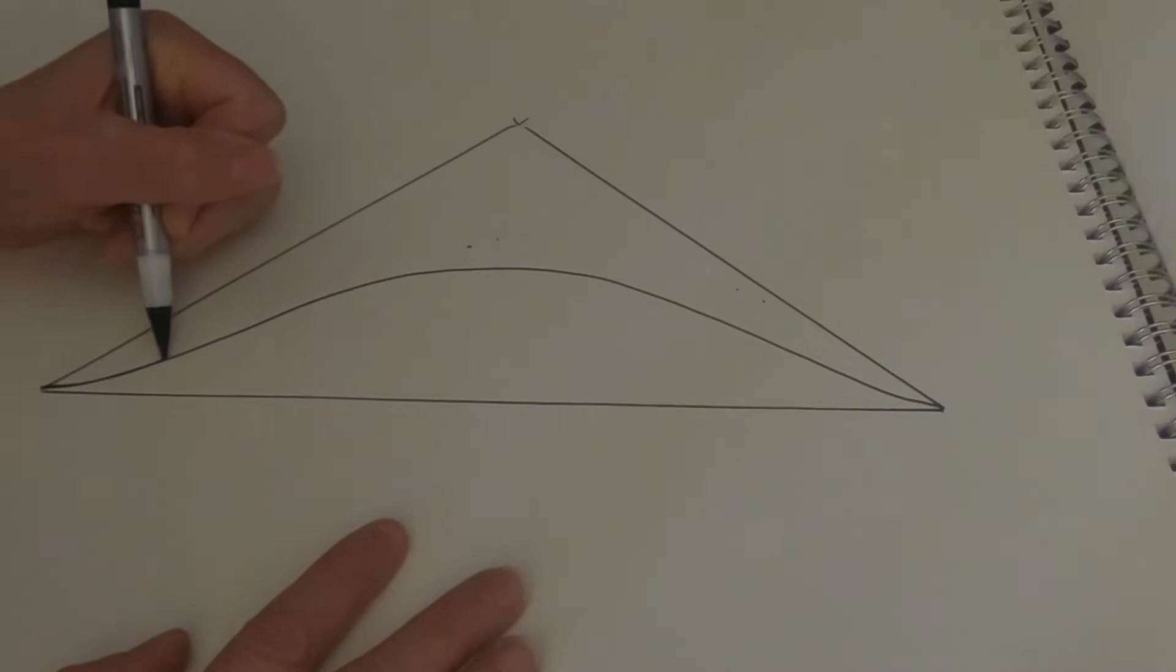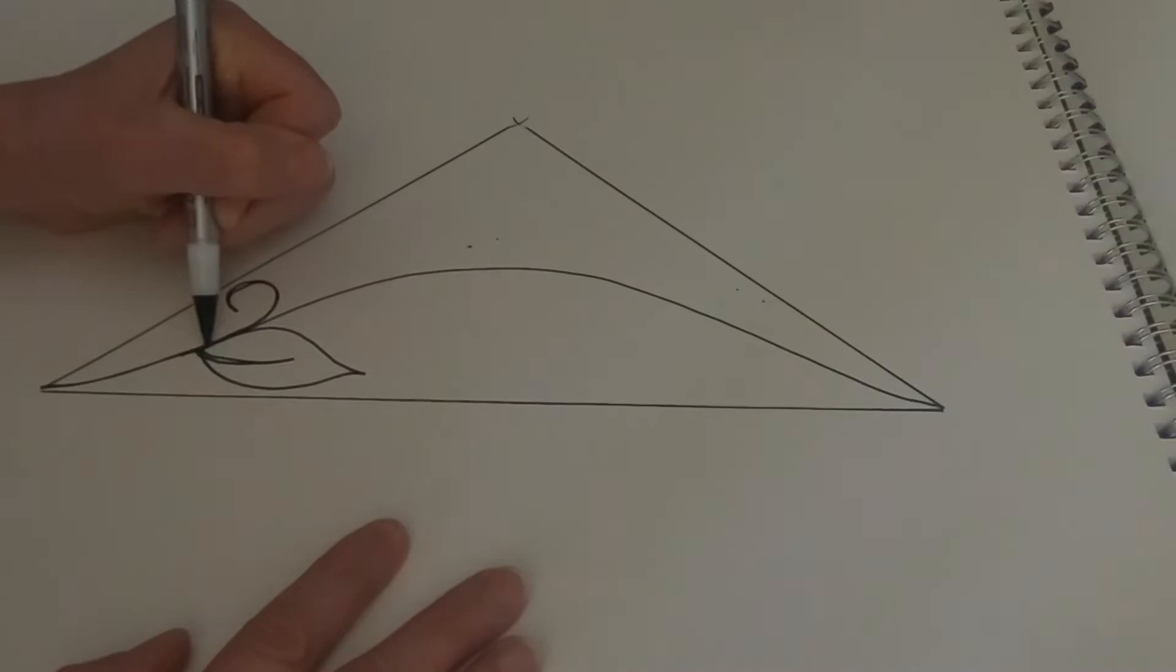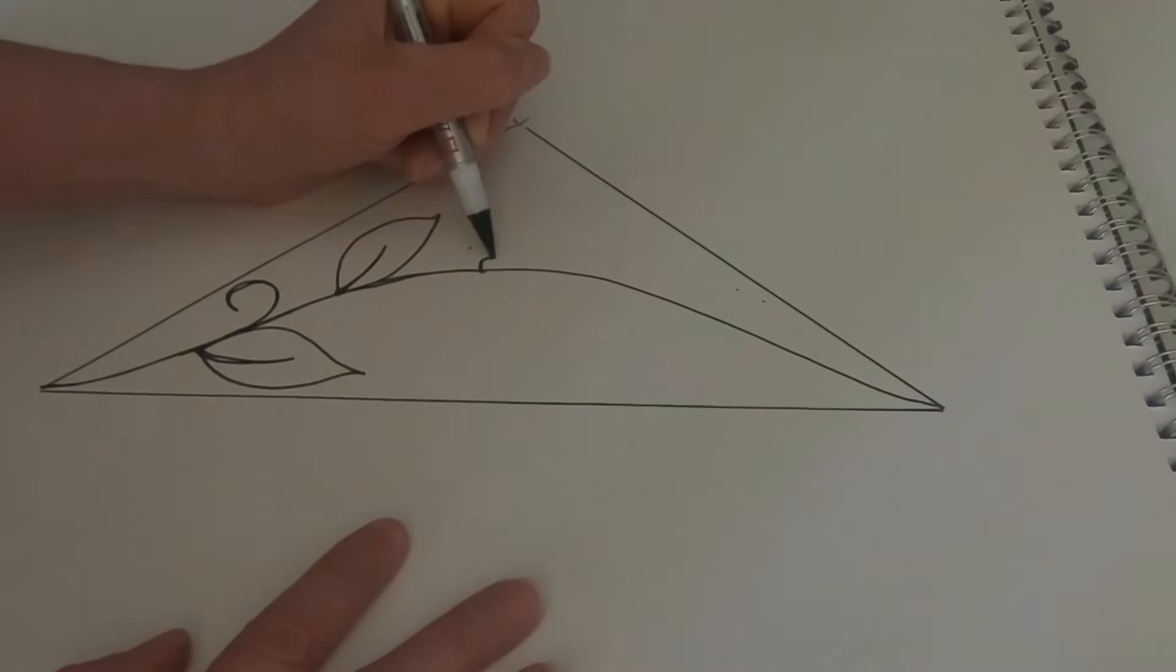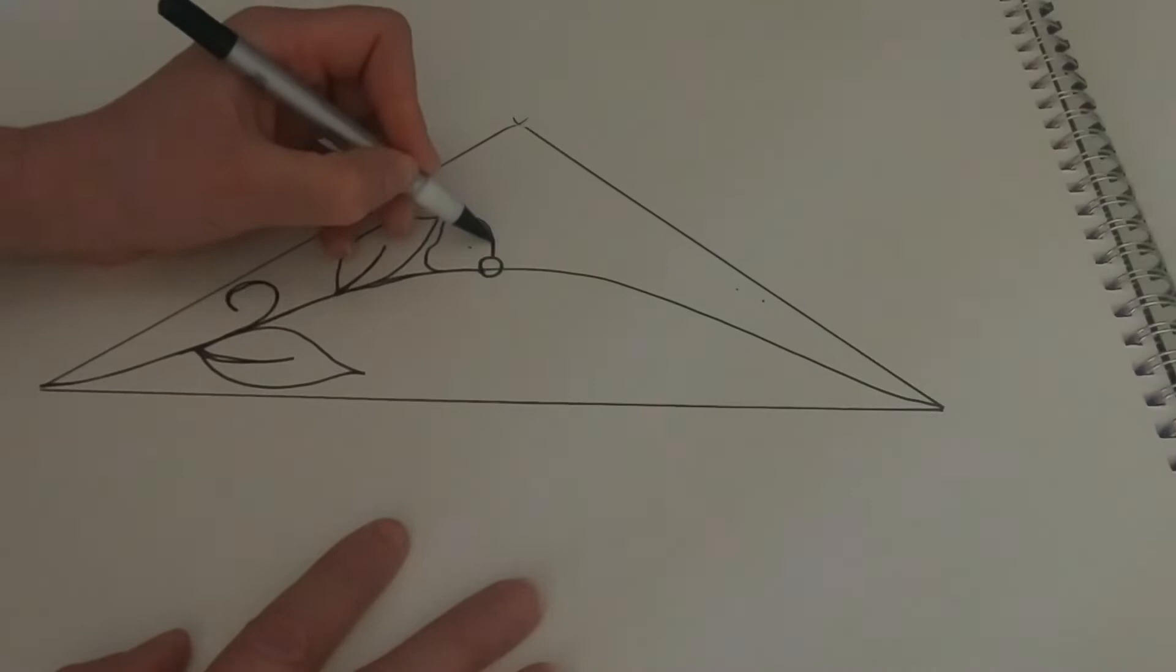We'll do a little curve or a hook rather. Then you can simply come out and do some leaves on your way up. You don't have to make the marks exactly. Come on up to the top, do your circle, and then you can start doing your flower.